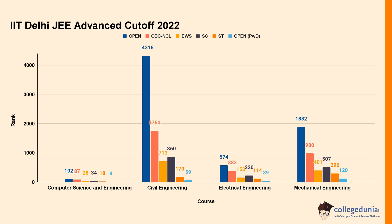For IIT Madras, Computer Science and Engineering 2022 closing ranks: Open category 102, OBC-NCL 87, EWS 28, SC 34. For Civil Engineering 2022 closing ranks: Open category 4316, OBC-NCL 1750, EWS 713, SC 860.